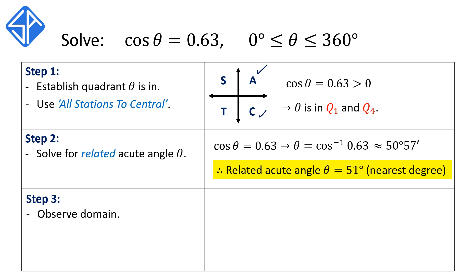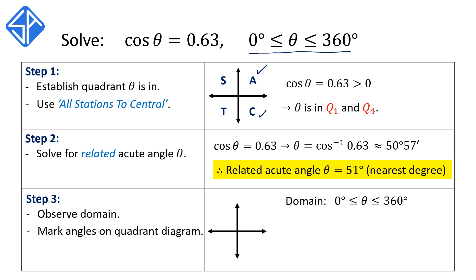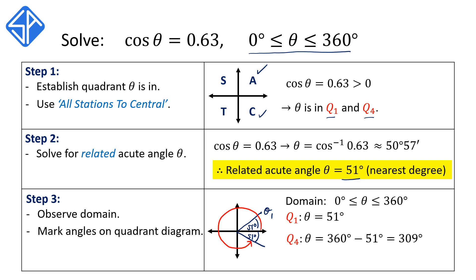Our last step is to work out the solutions. The domain of theta is between 0 and 360 degrees. We're going to mark the angles on the quadrant diagram with the related acute angle of 51. Theta is in Q1 and Q4, so our first solution in Q1 is just theta is equal to 51 degrees. Our second solution is in Q4, where we mark the related acute angle between the ray and the horizontal. That second solution is the angle from 0 degrees all the way to the ray, which corresponds to 360 minus 51, giving us 309 degrees. Theta is equal to 51 degrees or 309 degrees.